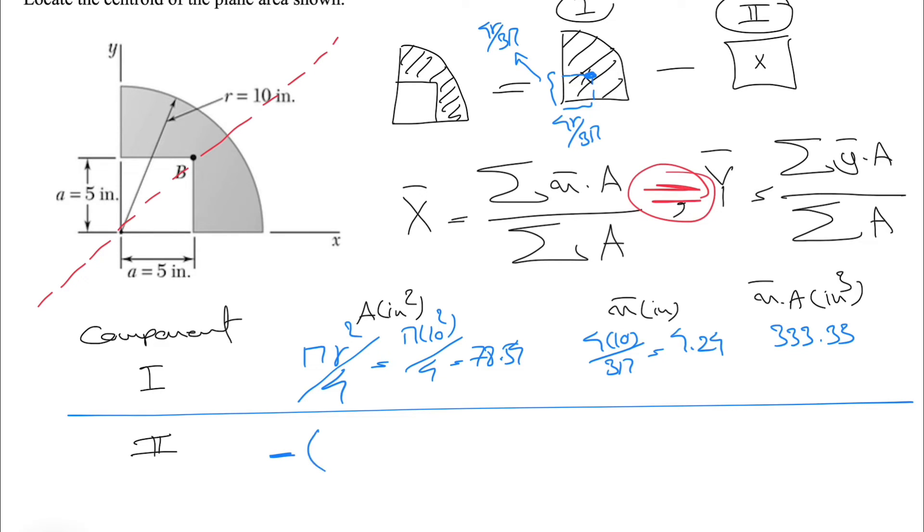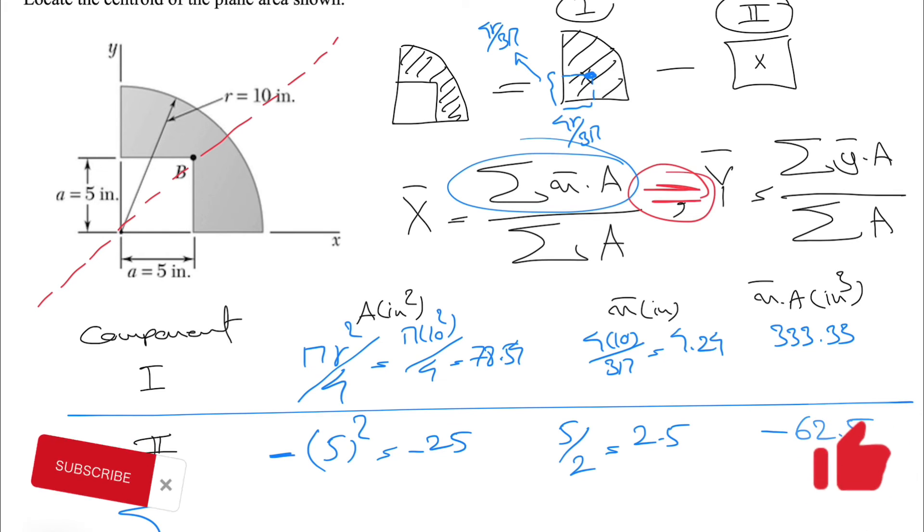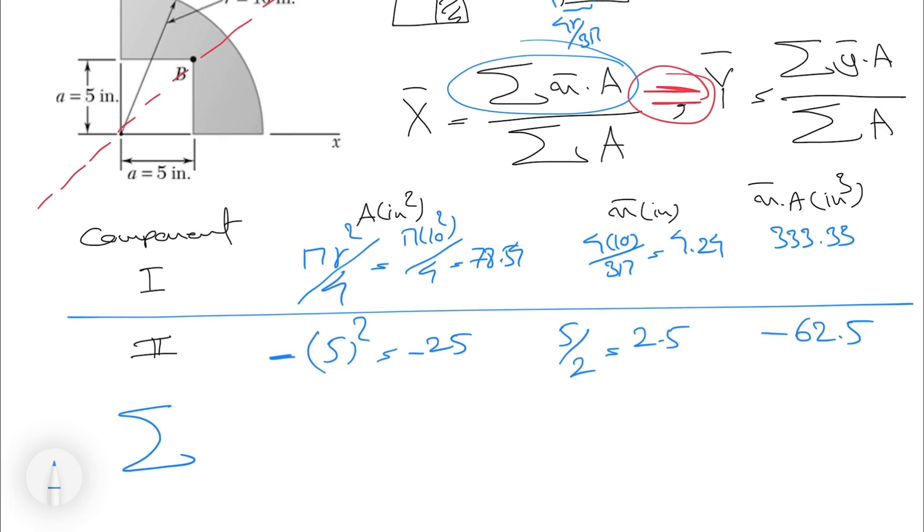That was the first figure. The second one, we'll have the square, and we have a negative sign in here because we have to subtract the square from the quarter circle. We're finding the area: we have 5 times 5, which is minus 25. The square is a symmetrical shape, so we'll be at the center, which would be simply 5 divided by 2, or the side, which we know is 5 inches divided by 2. So we'll have 2.5, and we'll get minus 62.5.